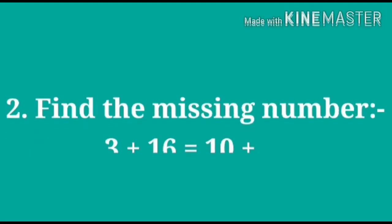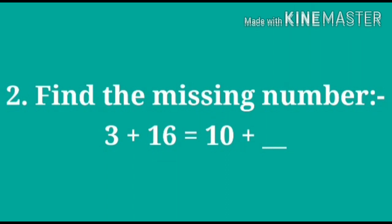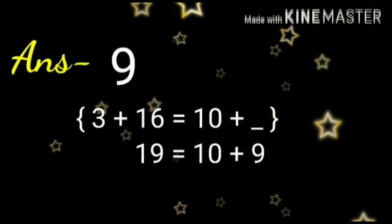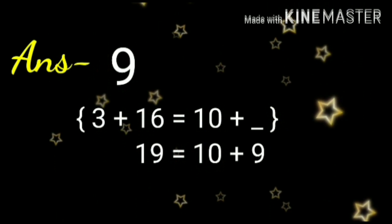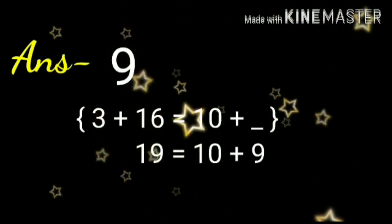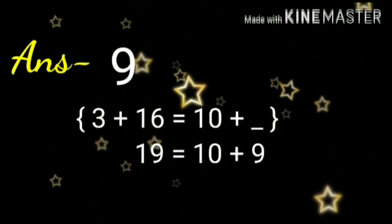Now, next, question number 2: Find the missing number. What we will do? We will add both sides. 3 plus 16 is 19. Then, 10 plus what we will do? 9. 19.